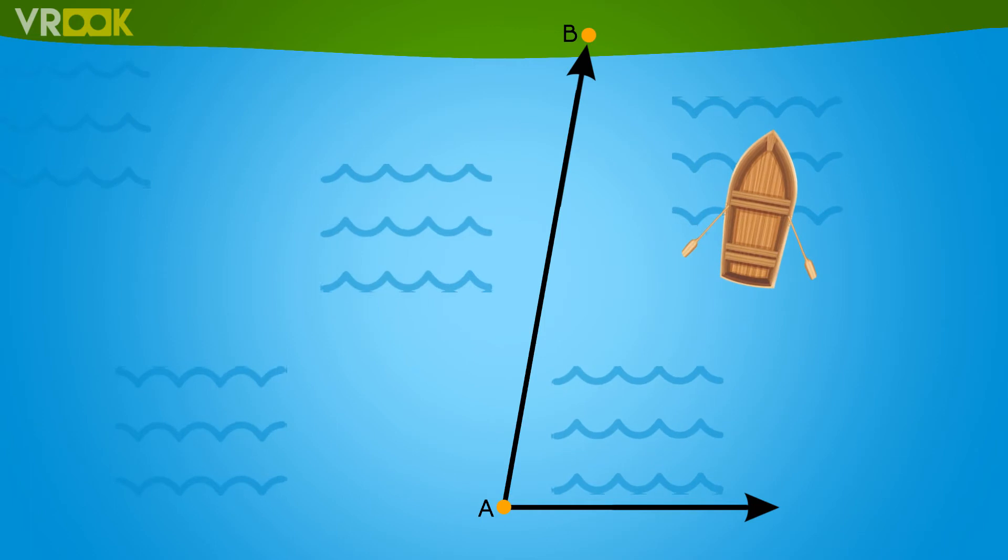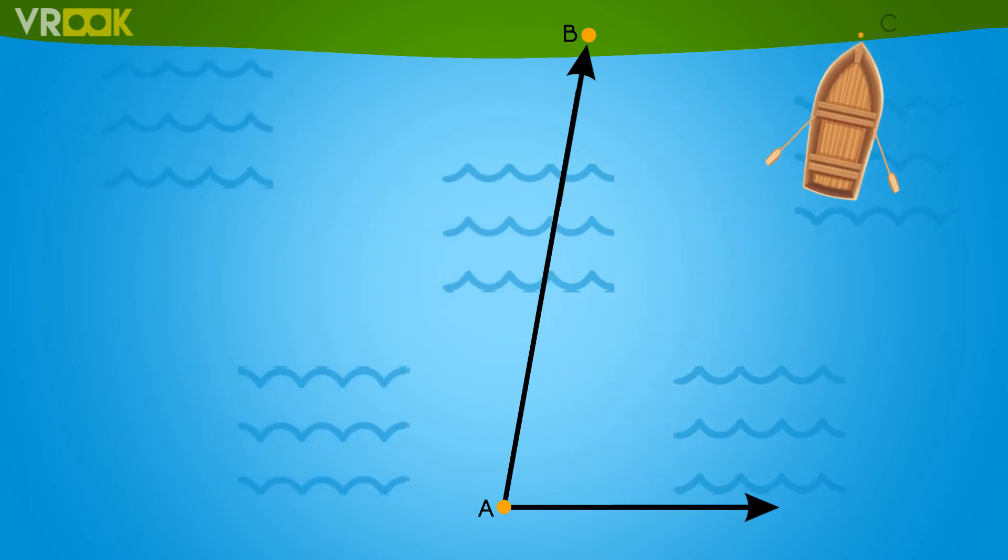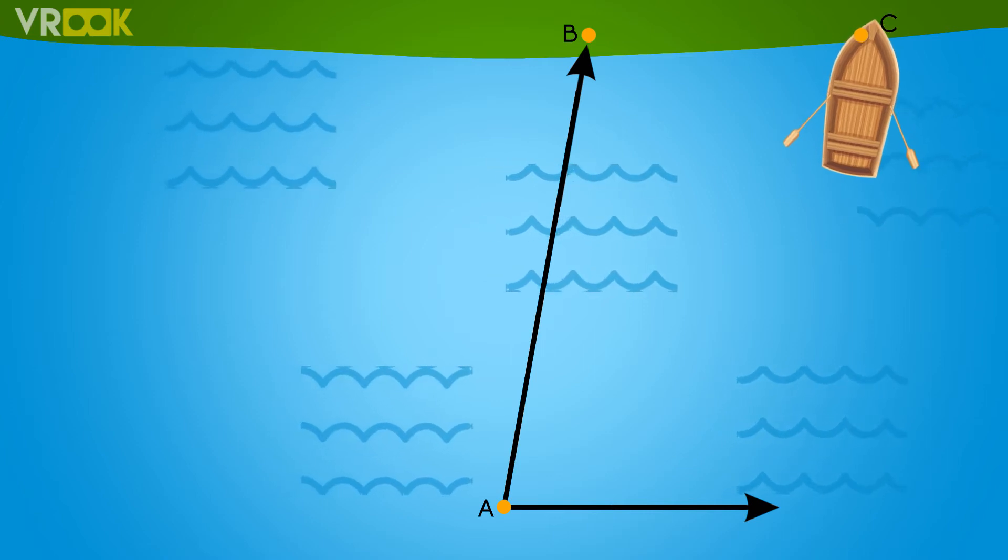In the end, you cross the river, but instead of reaching point B, you will reach point C. What has happened here?